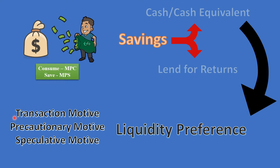The transaction motive handles regular transactions. For example, if you have a salary every one or two months, you need to keep cash for transactions over those two months. The transaction motive depends on the level of income — how much income you have determines the transaction motive.